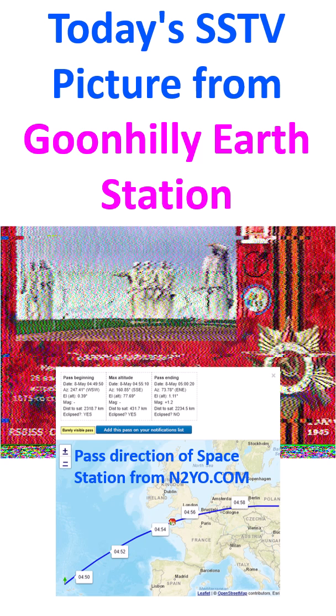After that, I used the Web SDR to play the audio received from the space station during the pass through the laptop speaker. I opened the Robot 36 app on my mobile phone and kept it near the speaker. That is how I decoded this image.